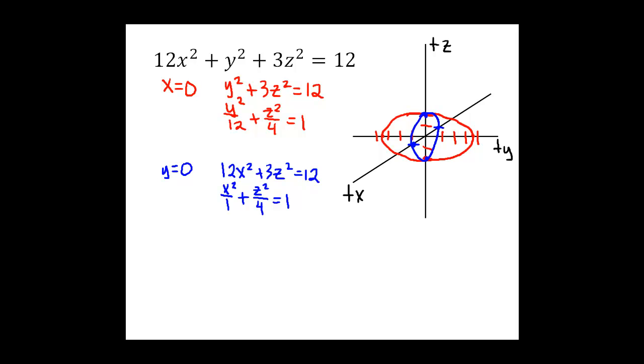And one more trace. If I plug in z = 0, we'll get 12x² + y² = 12. And if I divide through by 12 one more time, we'll get x²/1 + y²/12 = 1. And so that's another ellipse with x-intercepts at plus and minus 1, y-intercepts at plus and minus square root of 12. And if I connect those with an ellipse, I get kind of an equator here.